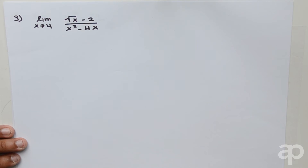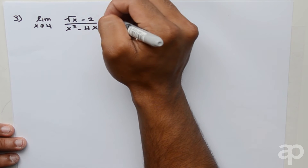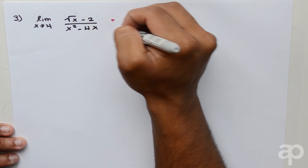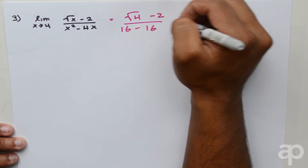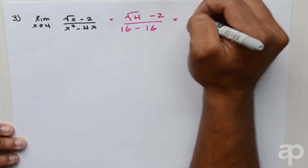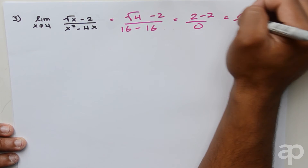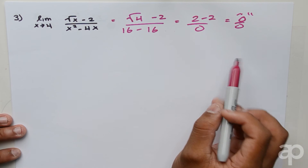Going to the next problem, we substitute 4 for x and see what we get. Substituting 4 gives us the square root of 4 minus 2 over 16 minus 16, which simplifies to 2 minus 2 over 0, or 0 over 0. Once again this is the indeterminate form and we have to simplify further.